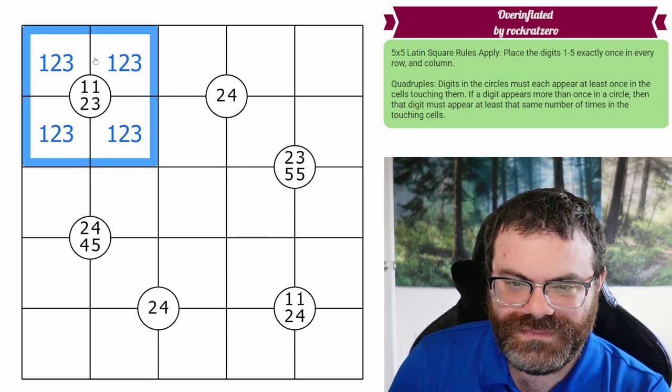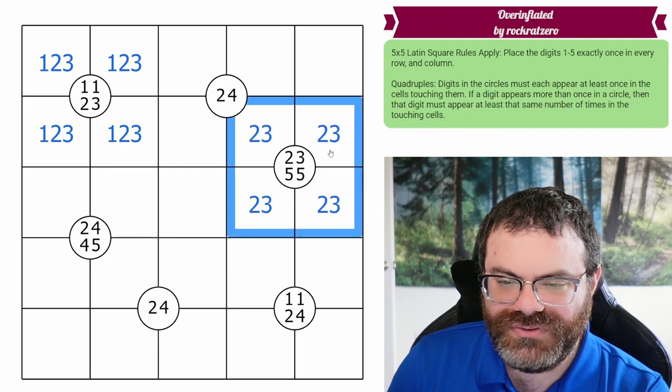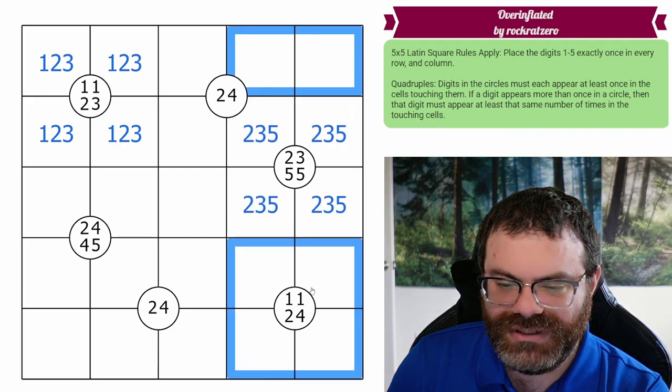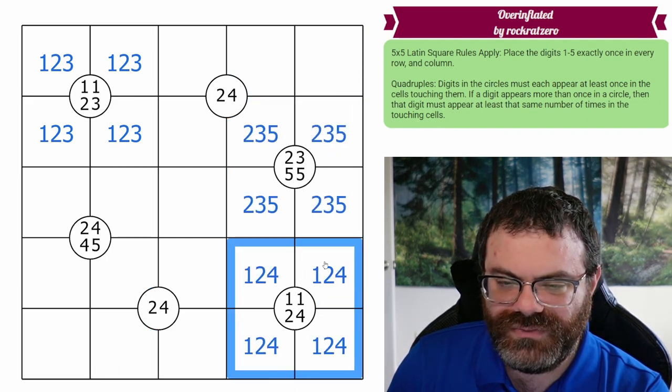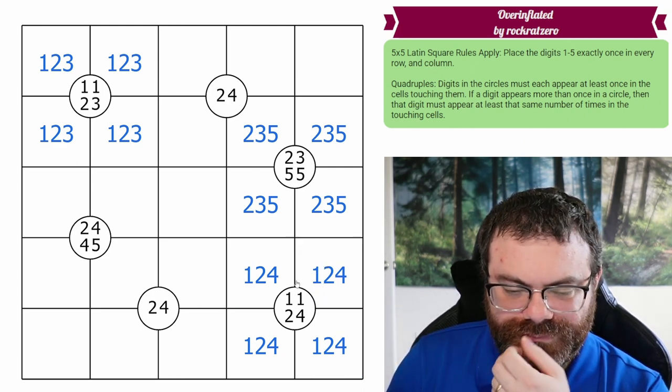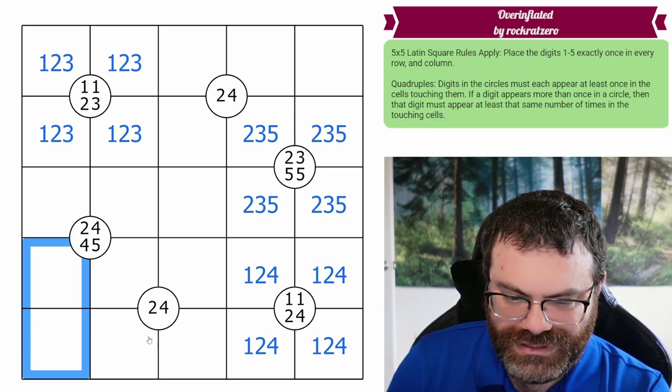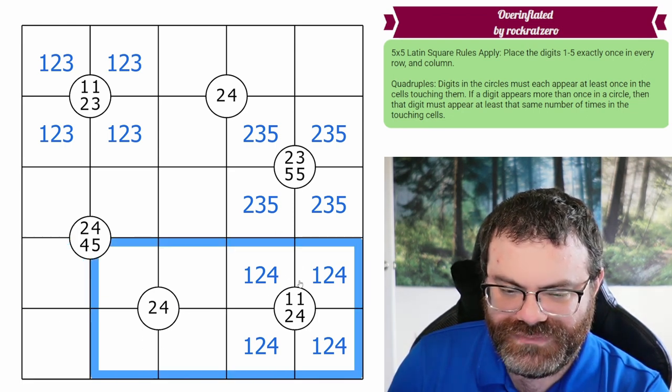And all the 1s are used up in this row and this column. These are from 2, 3, 5 and all the 5s are used up. These are from 1, 2, 4 and all the 1s are used up. In fact, these can't be from 2 or 4 because we have the 2, 4 here and we have a 2, 4 here.